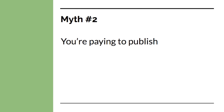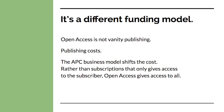The second myth is that you're paying to publish. Open access is not vanity publishing. Open access is simply a different funding model — publishing costs money or volunteer time. The article processing charge (APC) business model shifts the cost from reader to the author or research funder. Rather than subscriptions that only give access to subscribers, open access gives access to all. If you need help covering the cost of an APC fee, you may be able to write it into a grant or get funding from the TWU open access publishing fund. If you're a full-time faculty member, you qualify for this funding.